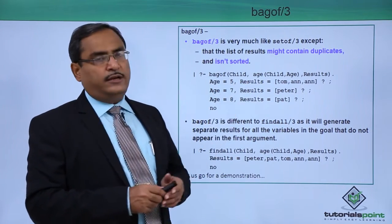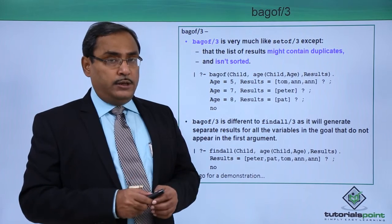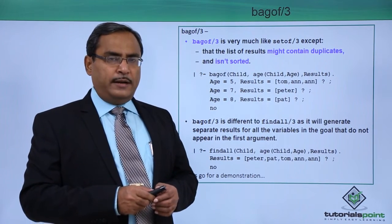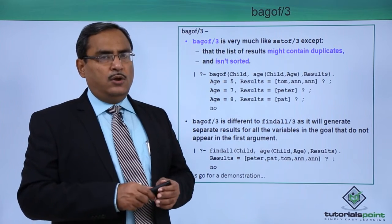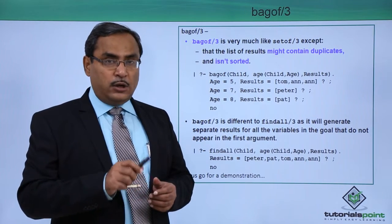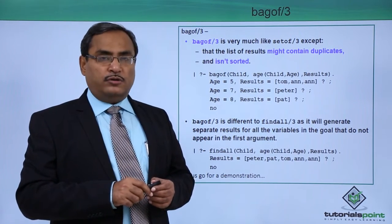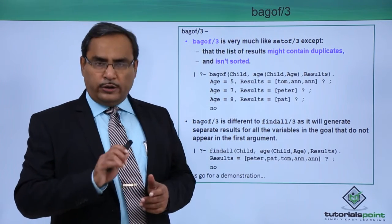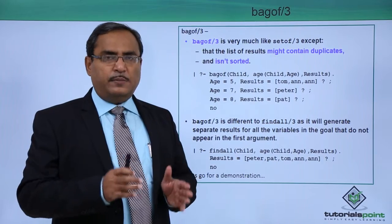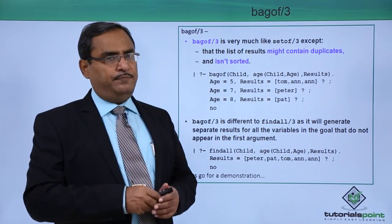In the separate video we have discussed this setof, setof/3. In case of bagof what will happen, we shall work same as that of setof, but in case of setof we had only the distinct values in the list and also the values were sorted in the list. But in case of bagof the sorting will not be done and it may have some repetition of values in the list as output.